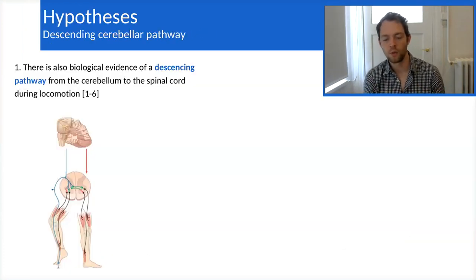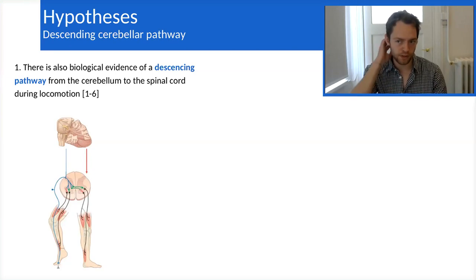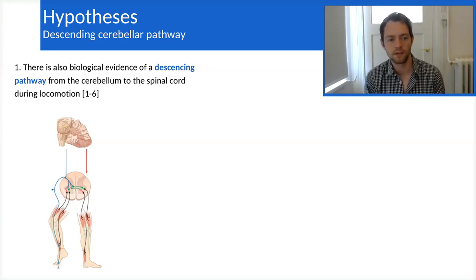To do that, we started from three main hypotheses. The first one is that there is evidence of a descending pathway from the cerebellum through the spinal cord during locomotion. That has been well documented in the works I provide here.